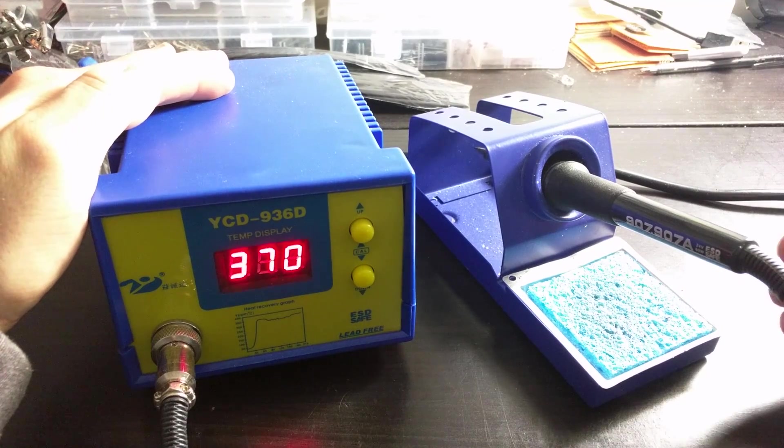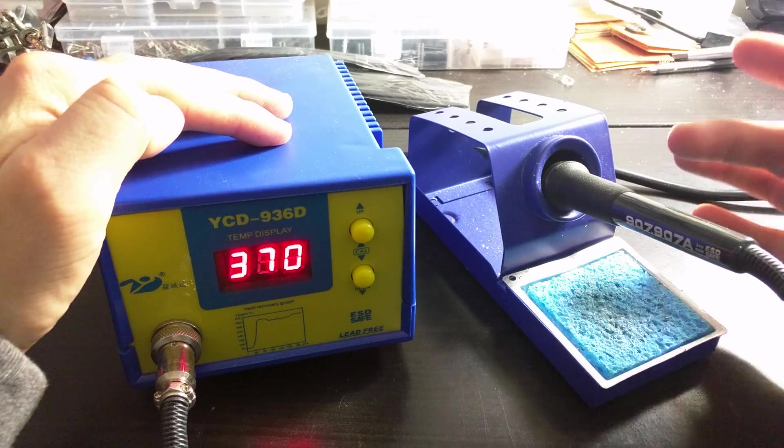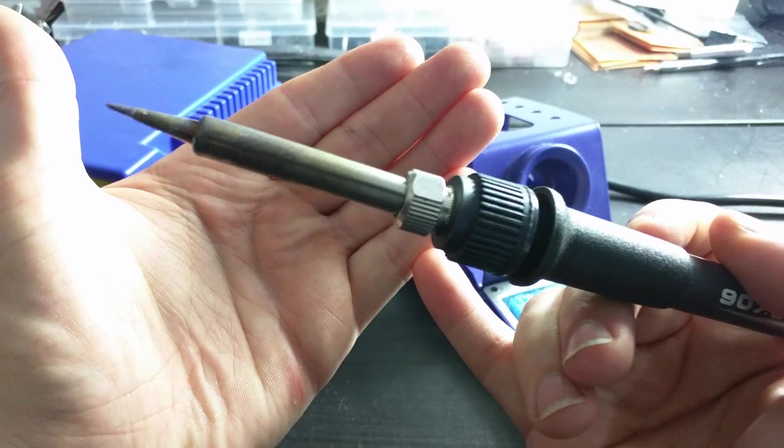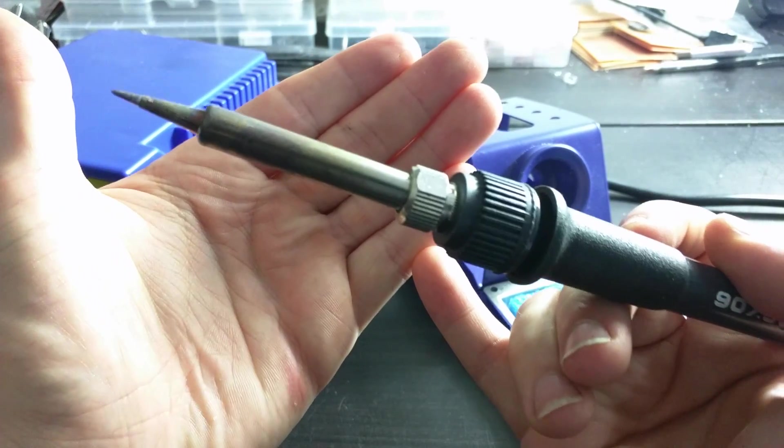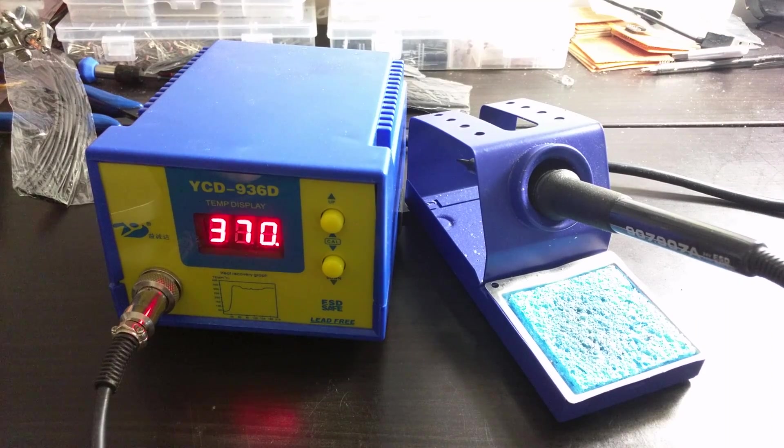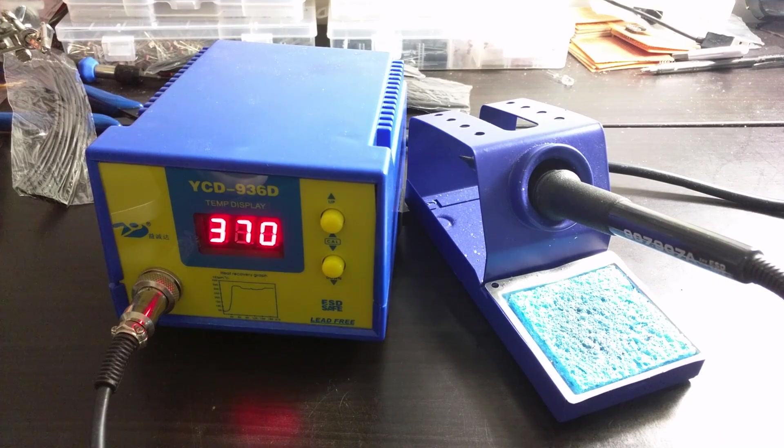If you've seen soldering irons before, you've likely seen two types. This type, which is a temperature controlled soldering iron, and the type of soldering iron which is just a soldering iron that plugs in directly to the mains with no temperature controls. Personally, I prefer a temperature controlled soldering iron because I need to vary the temperature of my iron depending on what I'm soldering.